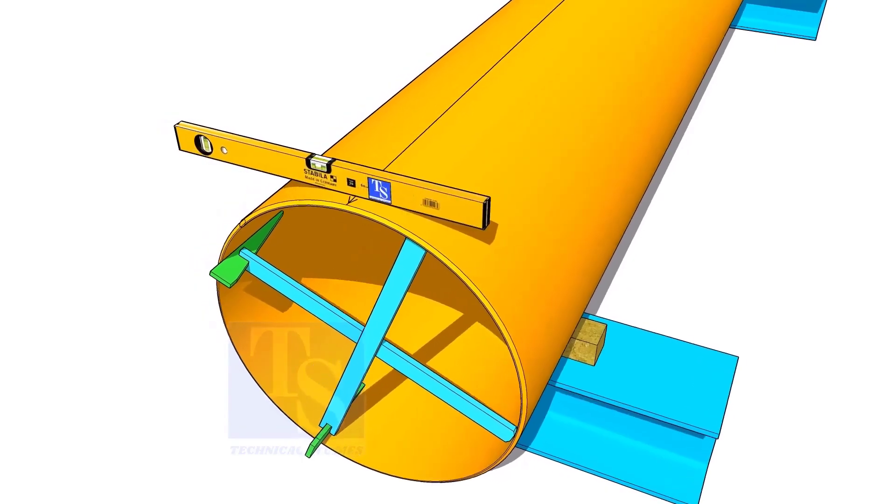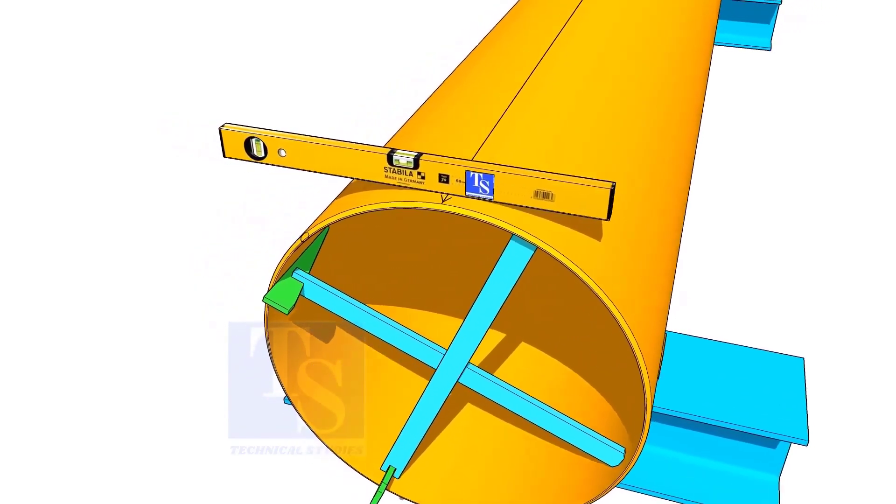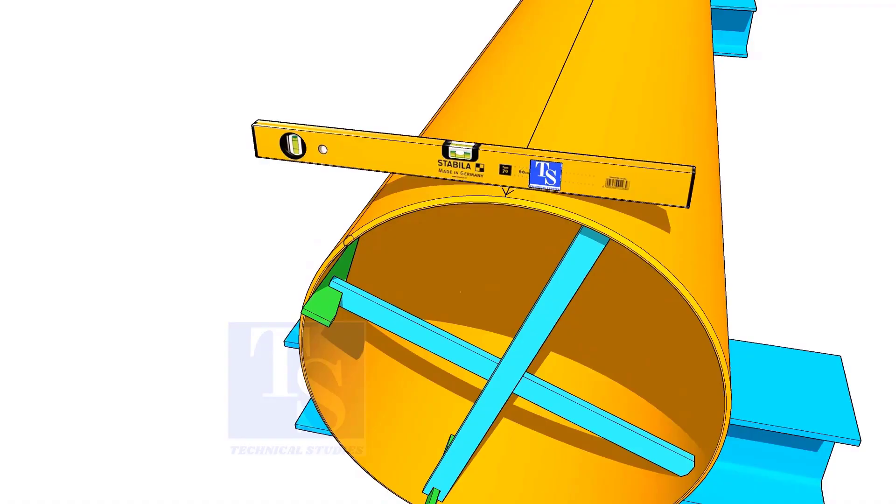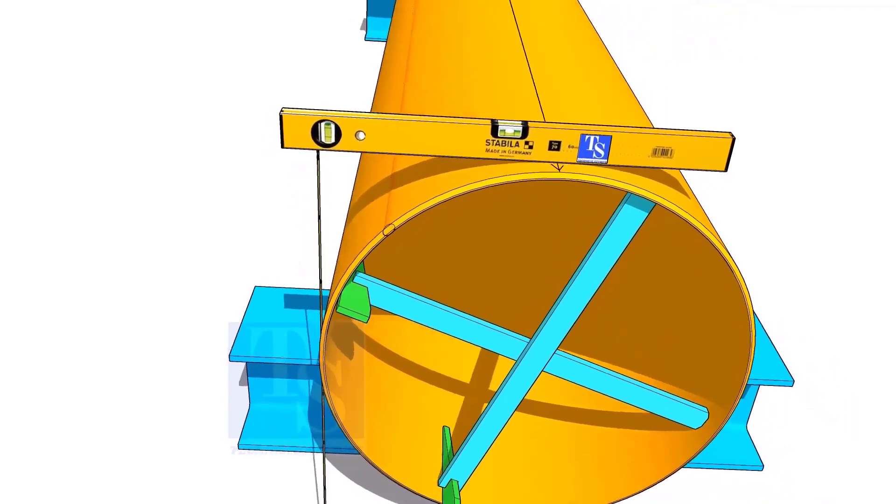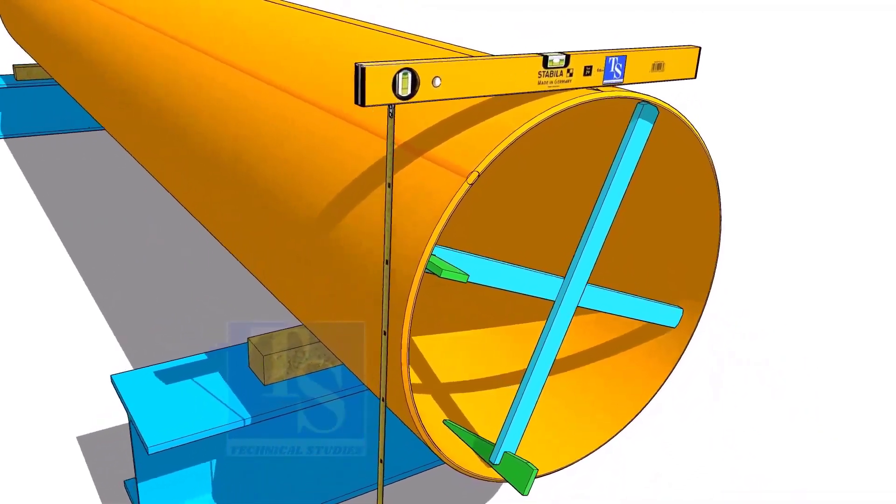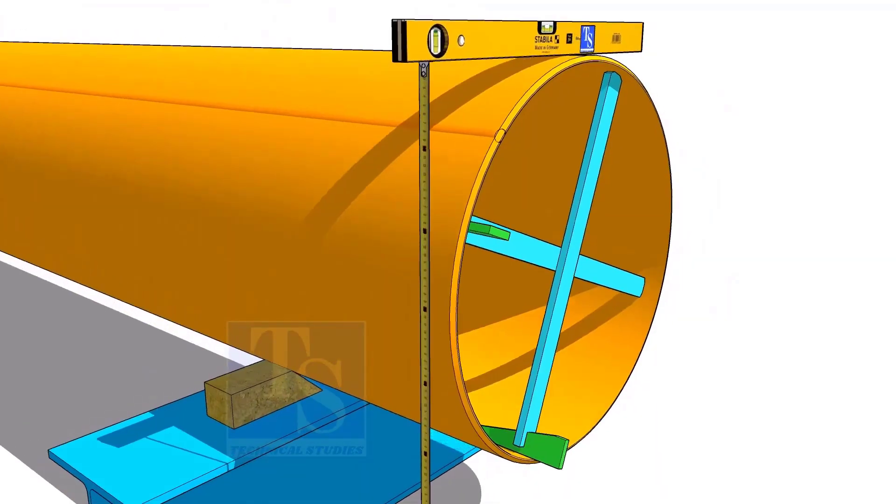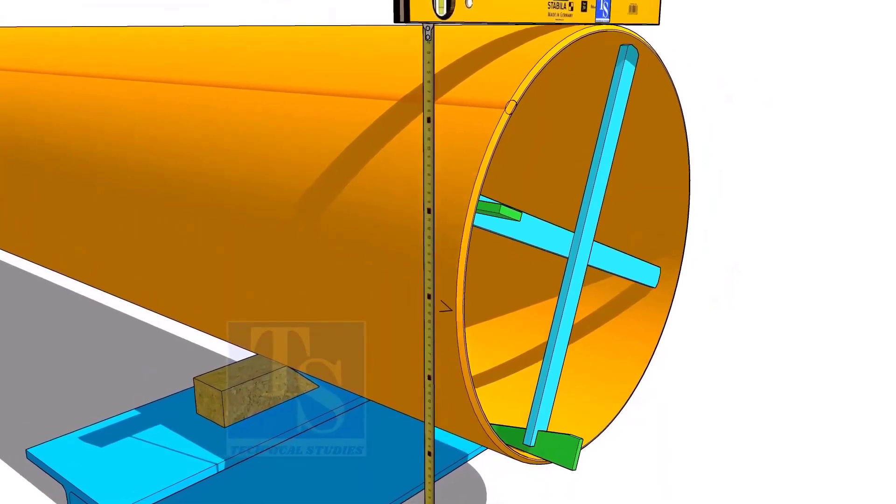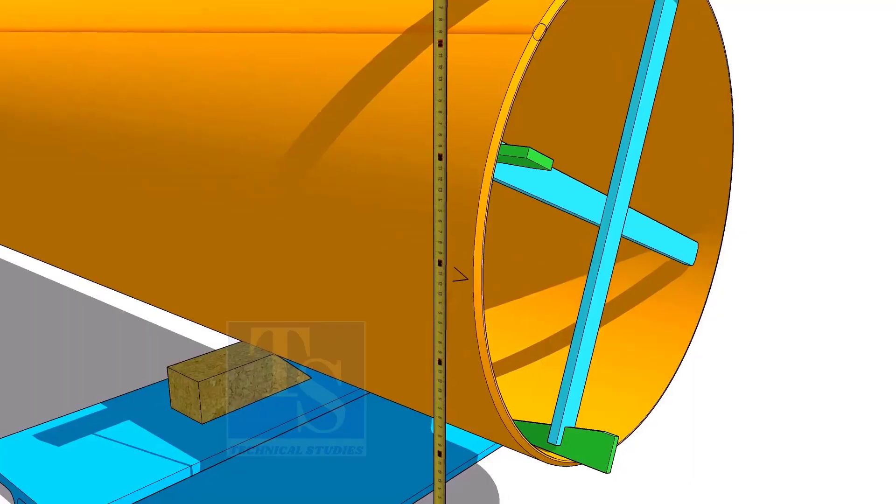Another method to mark the center line is to hold the level bottle horizontal and mark half OD on the side of the pipe. The advantage of this method is you can mark two opposite center lines at the same time.